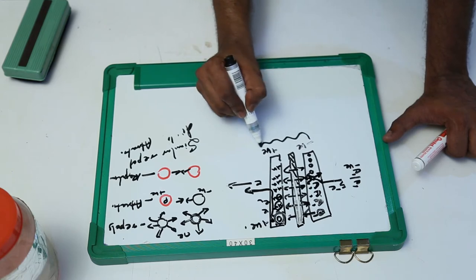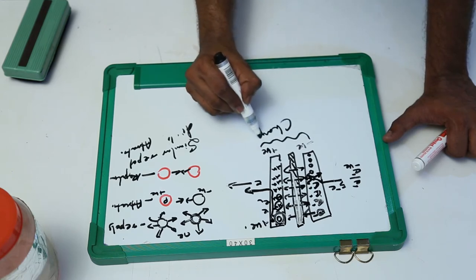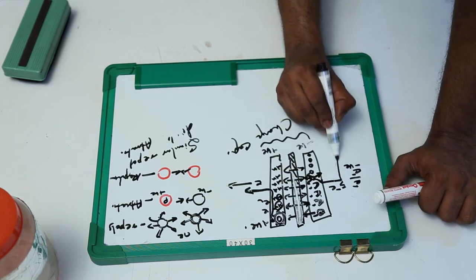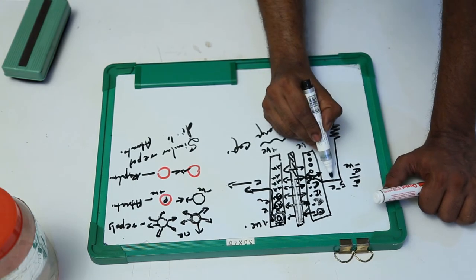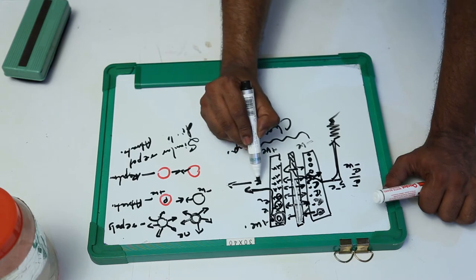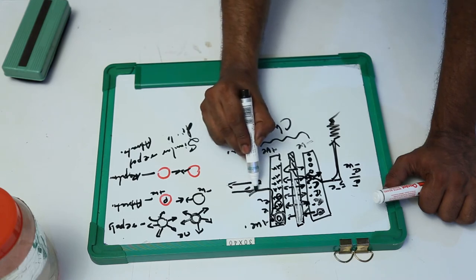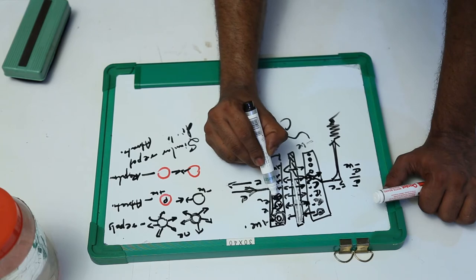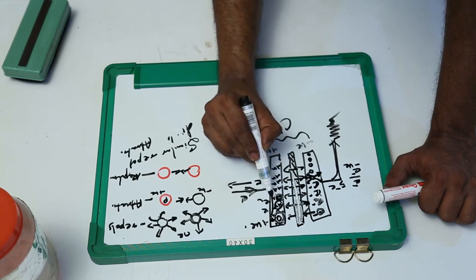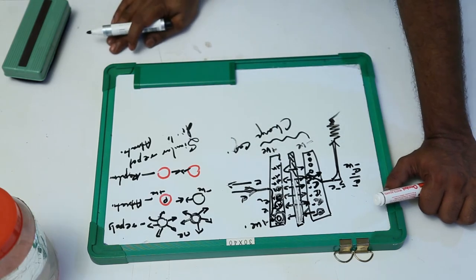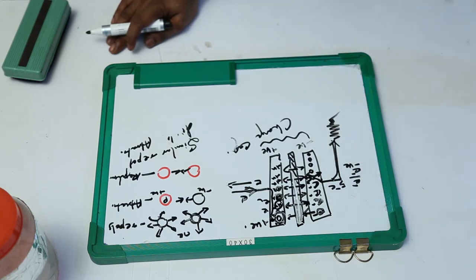Such a capacitor is called a charged capacitor. If we connect the negative plate to the ground, all the electrons run to the earth, and the electrons which left the other plate will come back and fill the gaps, and the atoms become neutral again. The capacitor is discharged. This is how a capacitor works.